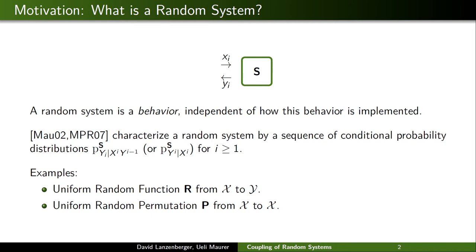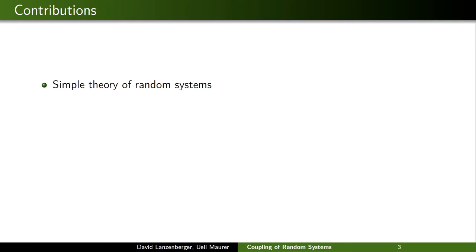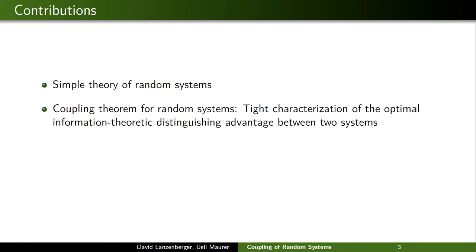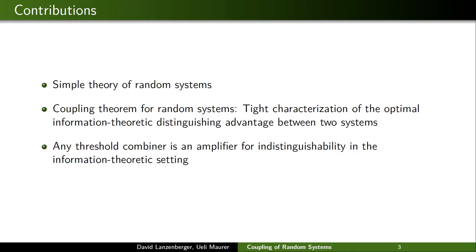The uniform random permutation p on some domain x is also a random system, different from r. Our contributions are as follows. First, we present a simple theory of random systems with a characterization that is different from the conditional probability distributions we've seen before. Within this theory, we present a coupling theorem for random systems, which provides a tight characterization of the distinguishing advantage classically defined via a distinguisher in the information-theoretic setting. We then use this coupling theory to prove a new indistinguishability amplification result, showing that any threshold combiner is also an amplifier for indistinguishability in the information-theoretic setting.